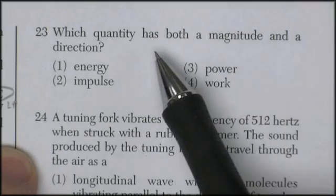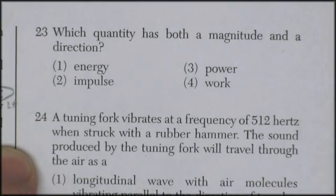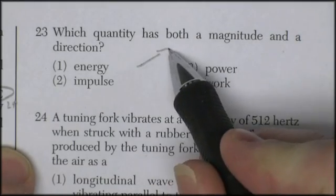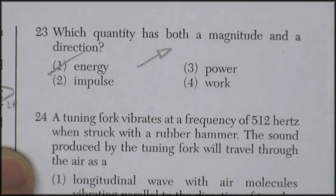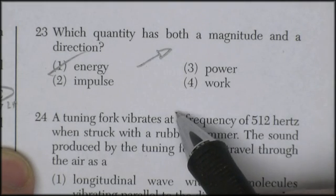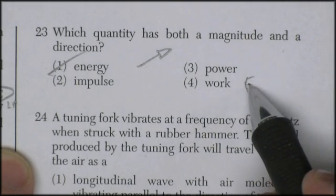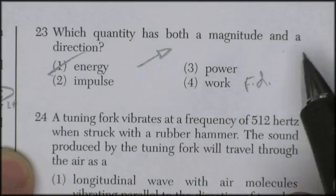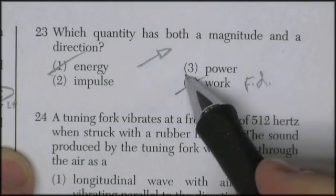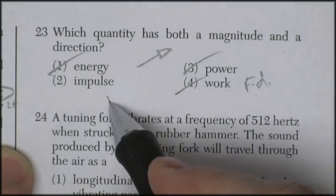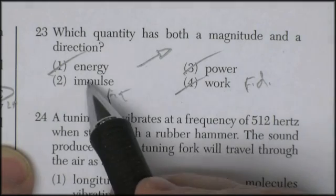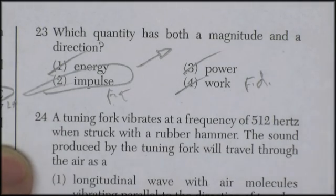Question 23. Which quantity has both a magnitude and direction? So we're looking for a vector quantity. Energy is not a vector. Work. Force times distance. Force times distance. But you can do other kinds of work and power. Impulse. Force times time. You apply a force for a period of time. This is going to have to be the vector. Impulse has got to be the vector in that problem.